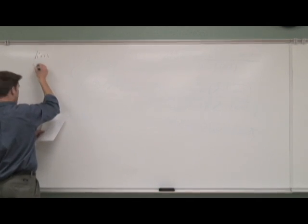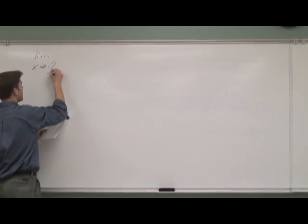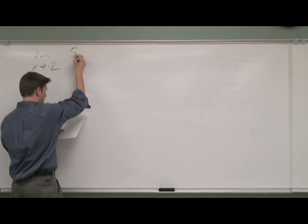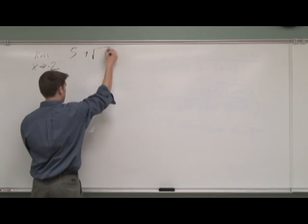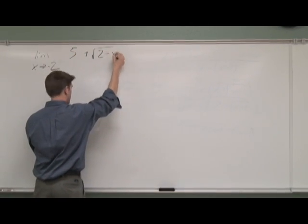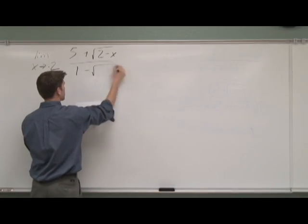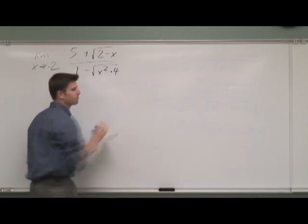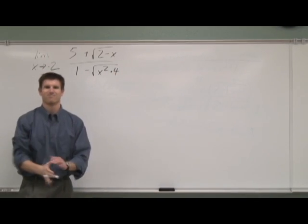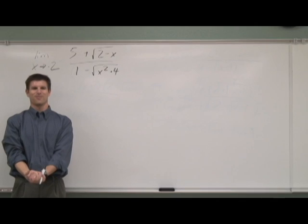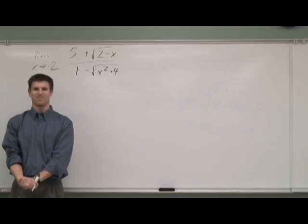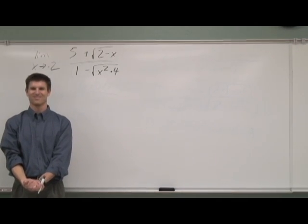The limit as x goes to negative 2 of 5 plus the square root of 2 minus x over 1 minus the square root of x squared plus 4. What are we going to do on this problem? We can't substitute.